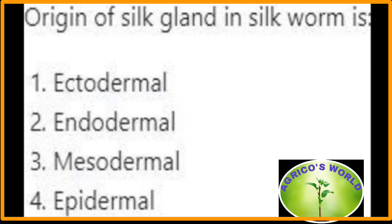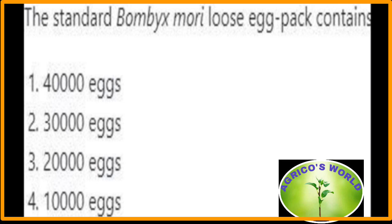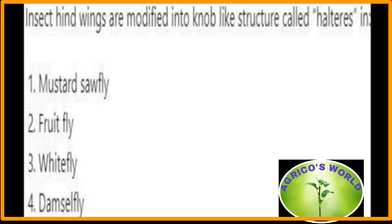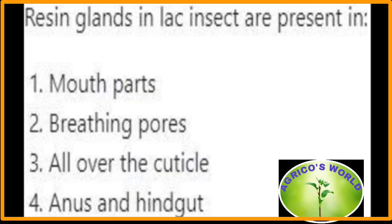The origin of the silk gland is ectodermal in silk worms. The standard Bombyx mori loose egg pack contains 20,000 eggs per box. Insect hind wings are modified into knob-like structures called halteres in fruit flies. In lac insects, the resin glands are present all over the cuticle.